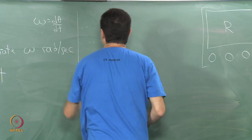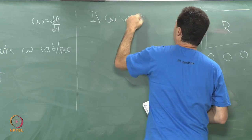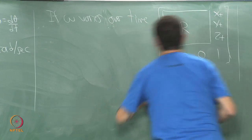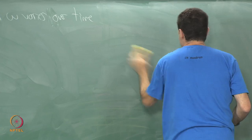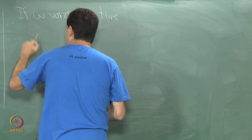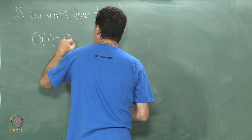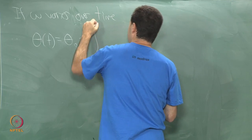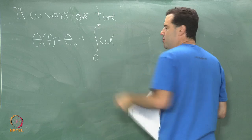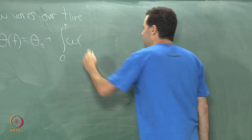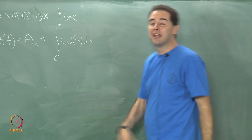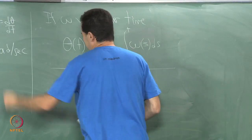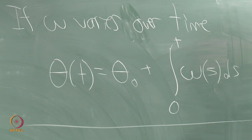Now, what if omega varies over time? Then theta of t is just theta-0 plus the integral from 0 to t of omega(s) ds. We just write omega as a function of time and integrate it. That's simple calculus — though as soon as you have to actually do integrals you're in a lot of trouble. In calculus it's so much easier to write things down than to actually do anything with them.